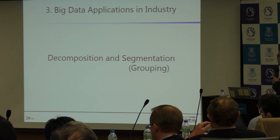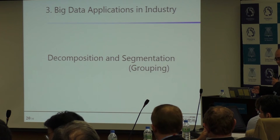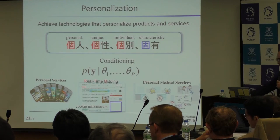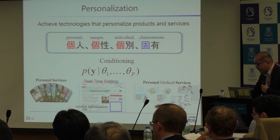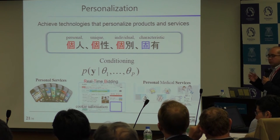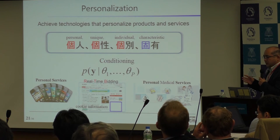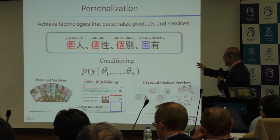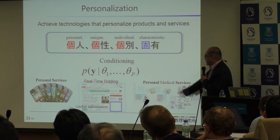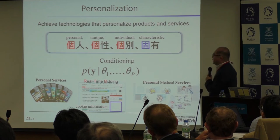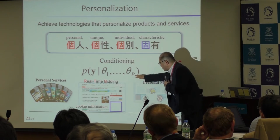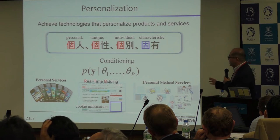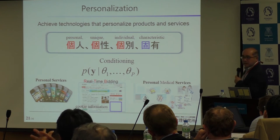We would like to show several examples of Big Data applications in Japanese industry. The major purpose in terms of personalization is to find out good conditional distributions. But we have to put in many explanatory variables. The major purpose is to find out this kind of conditional distribution.